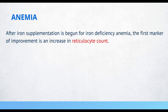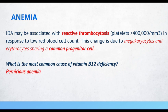After iron supplementation is begun for iron deficiency anemia, the first marker of improvement is an increase in reticulocyte count. If a patient has iron deficiency anemia, you may also see thrombocytosis in response to a low red blood cell count, because megakaryocytes and erythrocytes share a common progenitor cell.